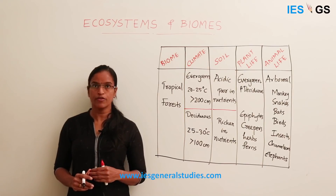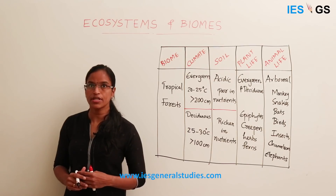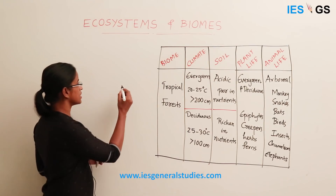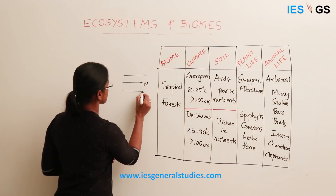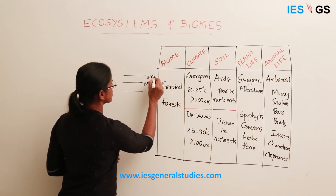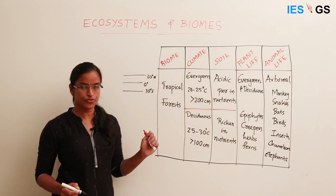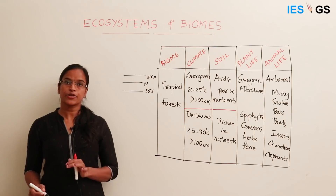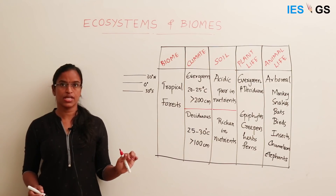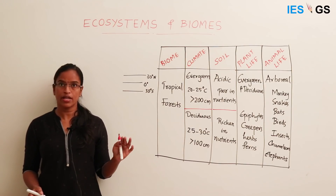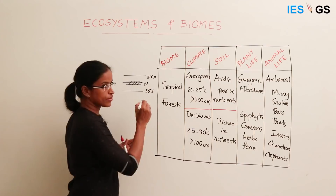Let us start from the tropical biomes — tropical forests. Tropical forests are found in the tropical regions, that is the region near the equator, up to 30 degrees north to 30 degrees south latitudes. There are mainly two types of tropical forests: evergreen forests and deciduous forests. Evergreen forests are otherwise called tropical rainforests, mainly confined around the equator.